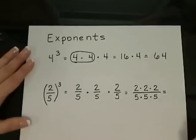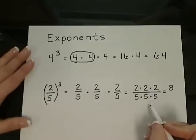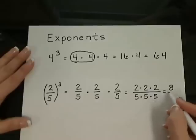On the top, 2 times 2 gives me 4, times 2 again gives me 8. And 5 times 5 gives me 25, times another 5 gives me 125.